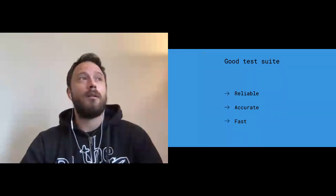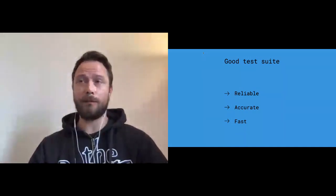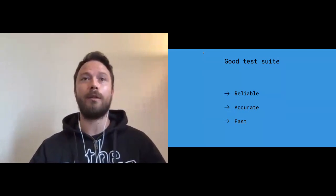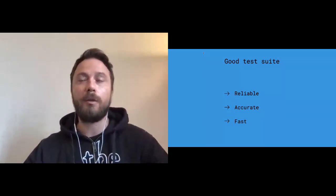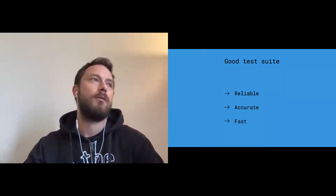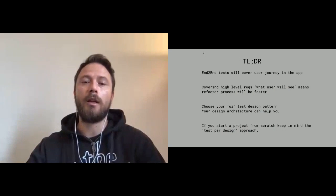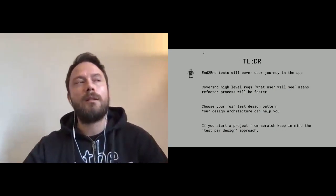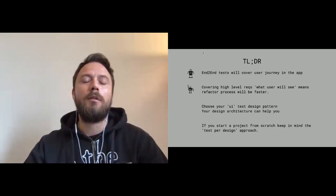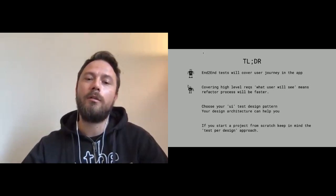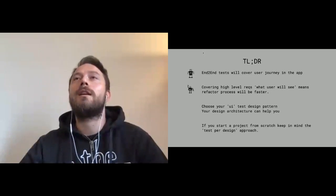Reliable because for example I tried to drive the same scenario using Robolectric and Espresso and found a lot of differences — they are not the same. Of course it should be fast so you don't want to spend a lot of time running your tests. A quick recap of what we said in this talk: end-to-end tests are very important and should cover the user journey in the app. If you are covering this journey, you are covering the high-level requirements — what the user will see.